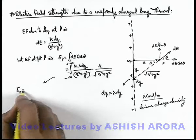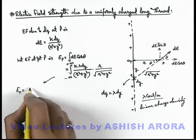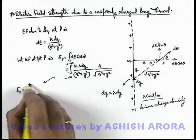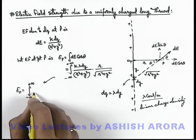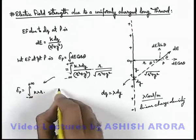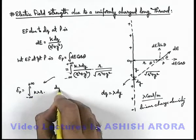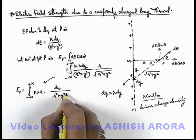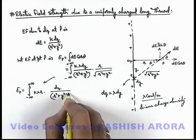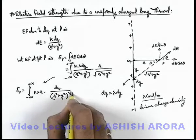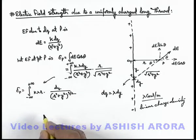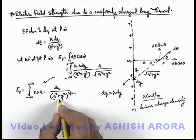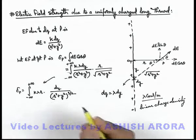So E_P equals the integral from minus infinity to plus infinity of k·lambda·r multiplied by dy divided by (r² + y²) to the power 3/2. We can easily integrate this by trigonometric substitution.